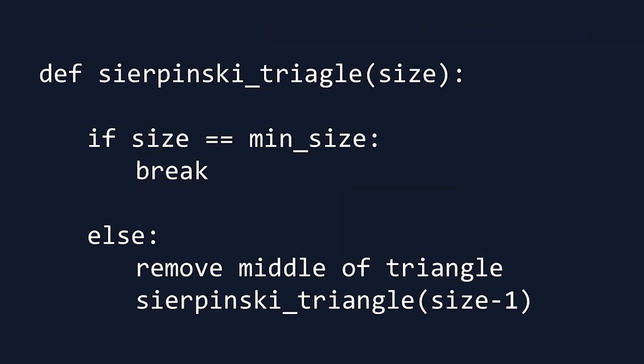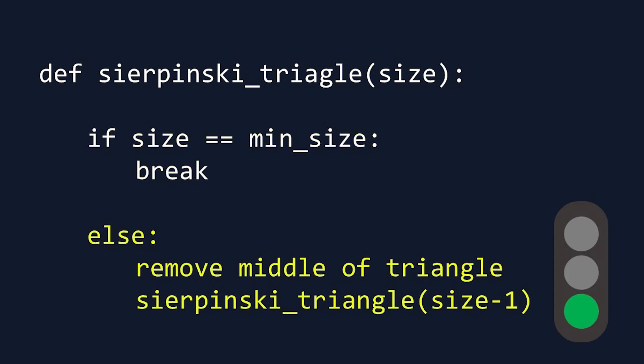Here's what it might look like in pseudocode. Our function takes in the size of a triangle as a parameter. The if statement is our base case, which stops the recursion, and the else statement is our recursive case, which continues the recursion.